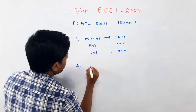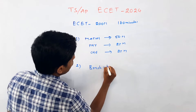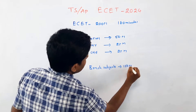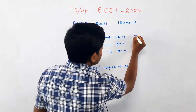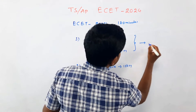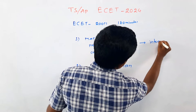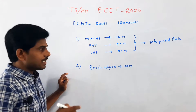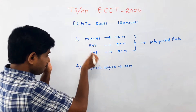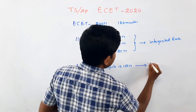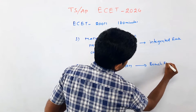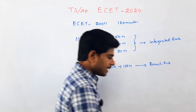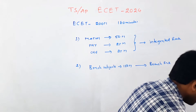The second one is Branch Subjects. Core subjects are not simple. Branch subjects are 100 marks. This is only 3 subjects' marks. Integrator Rank. Next is Branch Rank.